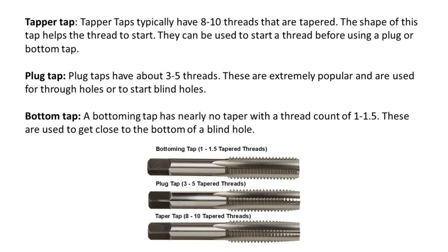Taper taps typically have 8 to 10 threads that are tapered. The shape helps the thread to start and they can be used before using a plug or bottom tap. Plug taps have about 3 to 5 threads and are extremely popular, used for through holes or to start blind holes. A bottoming tap has nearly no taper with a thread count of 1 to 1.5, and these are used to get close to the bottom of a blind hole.